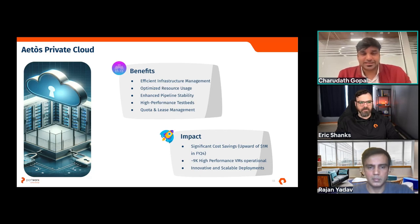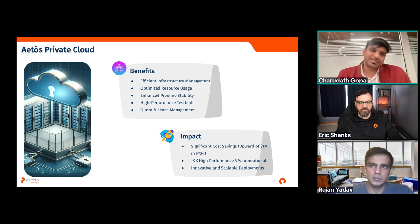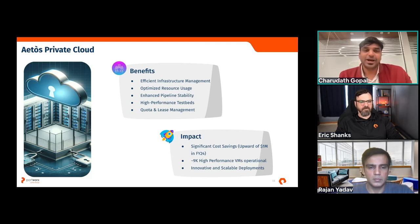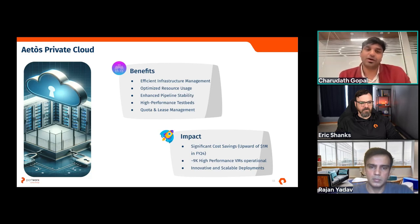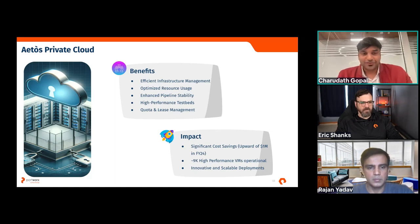We also have lease and quota management — I'll talk more about this in the demo. Today we're reaping the benefits: efficient cluster rebalancing, enhanced pipeline stability, and nice quota and lease management. The impact has been dramatic: we drastically reduced cloud costs by left-shifting deployments to on-prem. Our on-prem infrastructure is capable of running high-performance testbeds, and in FY24 we saved more than one million dollars. Our team of 115 engineers now runs 9,000 high-performance virtual machines at any given point in time.